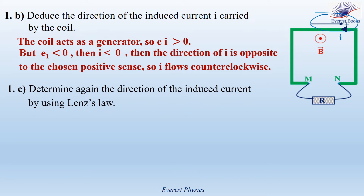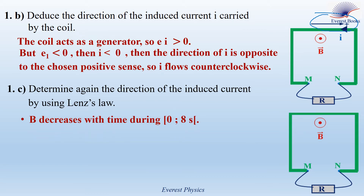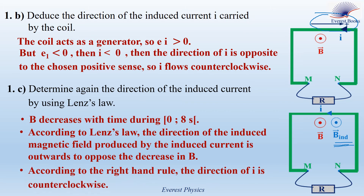Part 1C. Determine the direction of the induced current using Lenz's law. During the interval 0 to 8 seconds, the magnitude of the magnetic field is decreasing. According to Lenz's law, the induced magnetic field produced by the induced current must be directed outward to oppose the decrease in B. Applying the right-hand rule — curling the fingers with the thumb pointing outward — the induced current is counterclockwise.